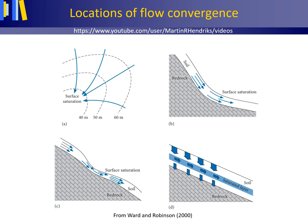Topographic convergence zones can be hillslope hollows or topographic depressions — that is, slope concavities in plan or slope concavities in section, as shown in this figure under A and B.